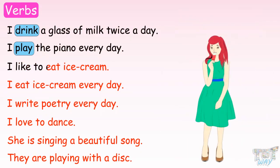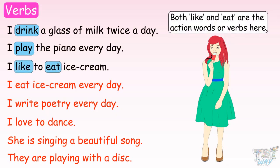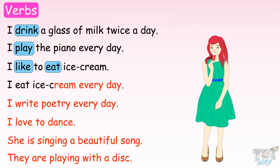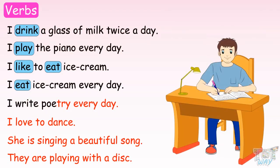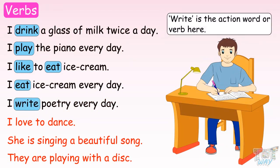I like to eat ice cream. In this sentence there are two action verbs, and they are like and eat. I eat ice cream every day — eat is the action word or verb here. I write poetry every day — write is the action word or verb here.